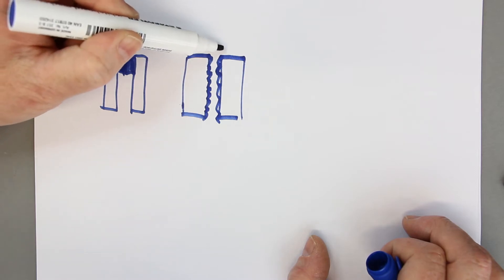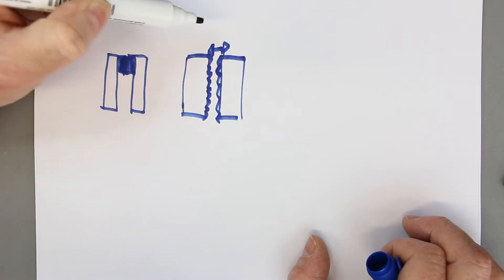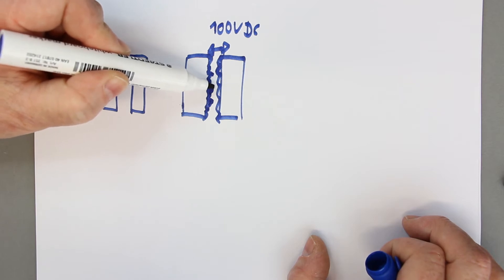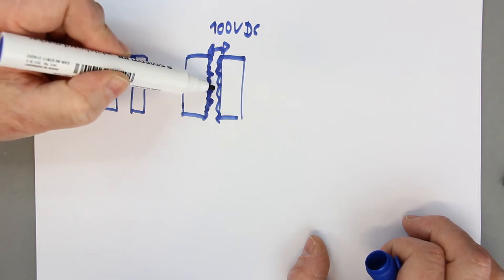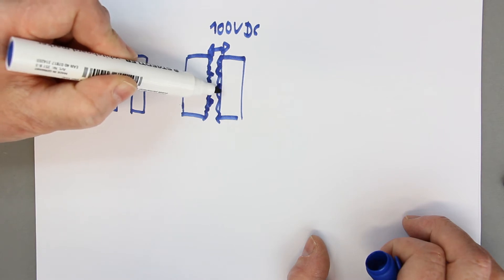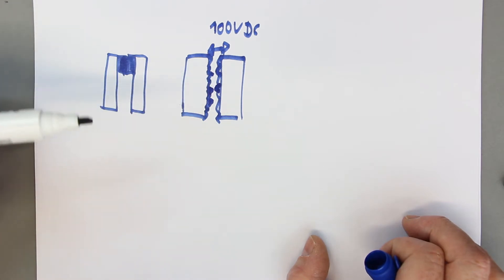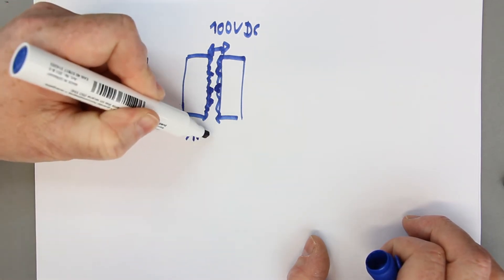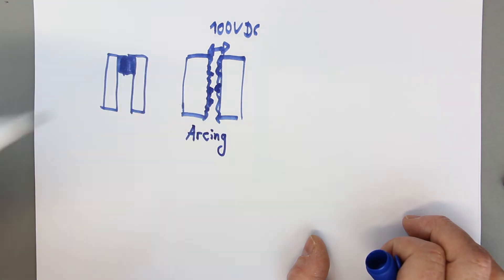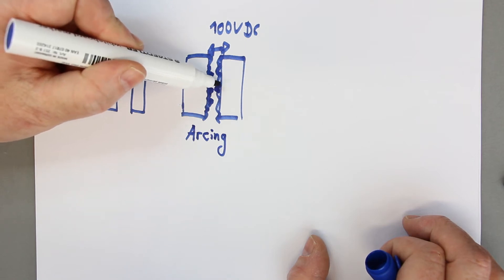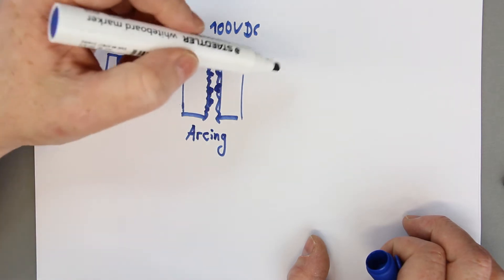Both contact surfaces have little tips. Now suppose you have a voltage between the two contacts of, let's say, 100 volts DC. At these little tips of the micro-roughness, the electric field strength is very high. If there are two tips directly opposite, there is an effect called arcing. It's the same as you know from an arc lamp or electric arc welder. The field strength is so high that a little plasma channel is generated through the air.